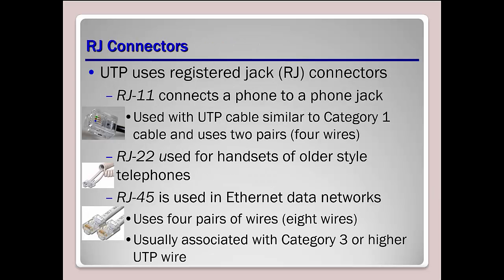Looking at the connectors: an RJ11 is the phone jack connector that connected into the back of the old telephones. The RJ22 had fewer wires and connected the handset to the phone. For data networks, RJ45 is the four twisted pair connector — usually associated with Cat3, Cat4, etc.